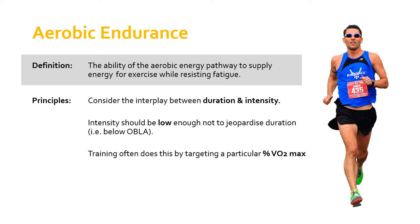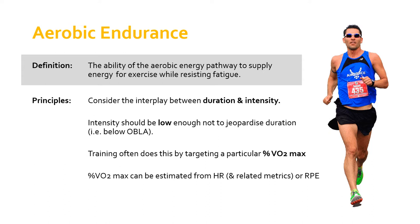You might not know how to work out your VO2max, but there are watches and devices that can calculate it for you. An even simpler way is to estimate your percentage VO2max from heart rate or related metrics such as heart rate reserve, or very simply — Rate of Perceived Exertion (RPE). The RPE has been shown to correlate really nicely with percentage VO2max. The Borg scale gives a very accurate indicator of where you are in terms of your percentage VO2max, making RPE a very useful tool for gauging training intensity.